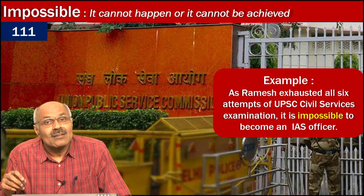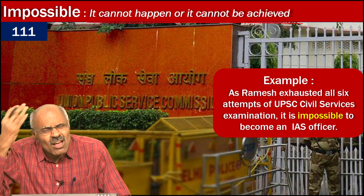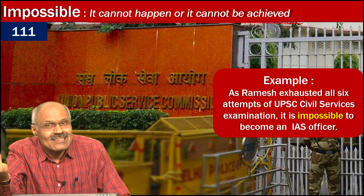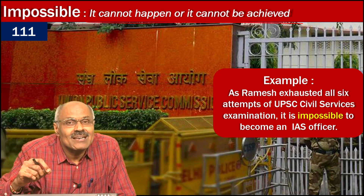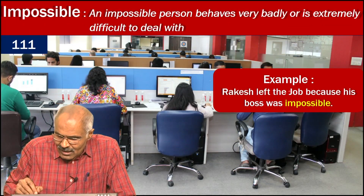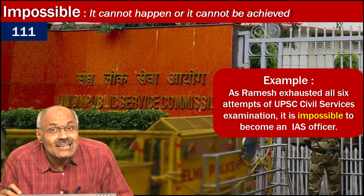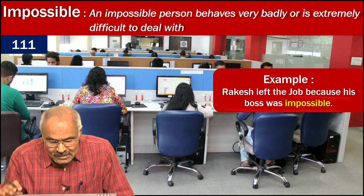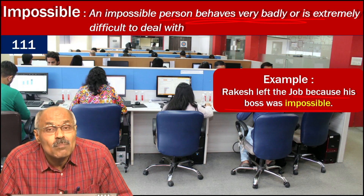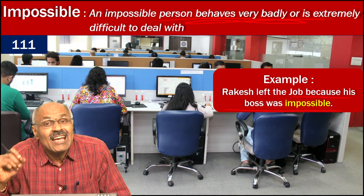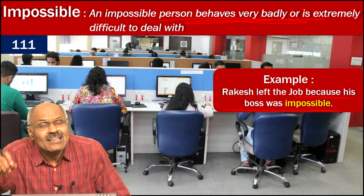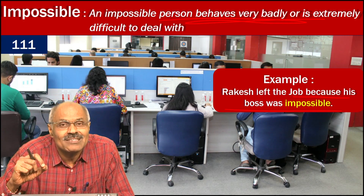The next word is 'impossible,' meaning not at all possible. For example, if you have exhausted all six attempts in UPSC, you cannot become an IAS officer as a general candidate — that is impossible. A second meaning: if someone's boss is behaving very badly and rudely, causing the employee to leave, you can say Rakesh left the job because his boss was impossible. So impossible also describes unacceptably bad behavior.